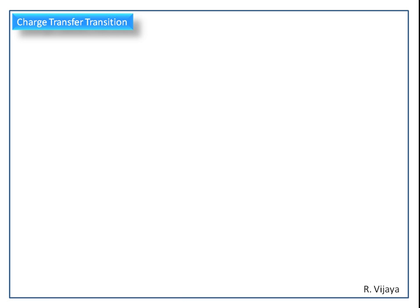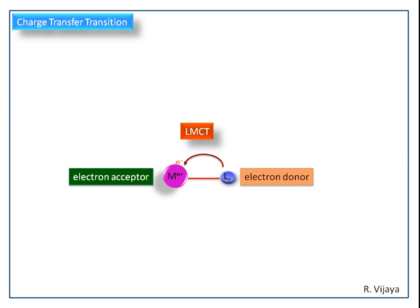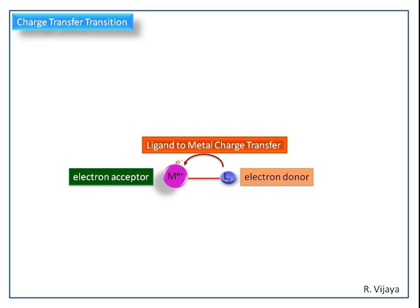Now we discuss the charge transfer transition. Let us consider this metal complex. The charge transfer transition is defined as the transfer of an electron from one atom to another atom within the complex. The transfer of an electron from the ligand to the central metal atom is known as ligand to metal charge transfer transition, or LMCT.